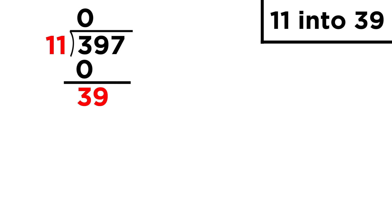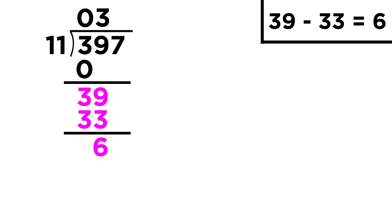Eleven does fit into thirty-nine three times, so we put a three, multiply to get thirty-three, subtract to get six, and then pull down the seven.